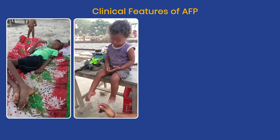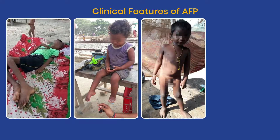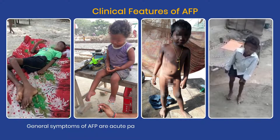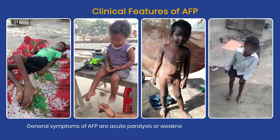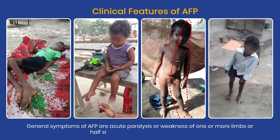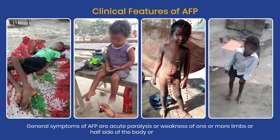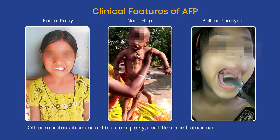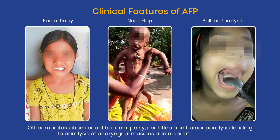Now let us look at the signs and symptoms of AFP. General symptoms of AFP are acute paralysis or weakness of one or more limbs, or half side of the body, or all four limbs. Other manifestations could be facial palsy, neck flop and bulbar paralysis, leading to paralysis of pharyngeal muscles and respiratory muscles.